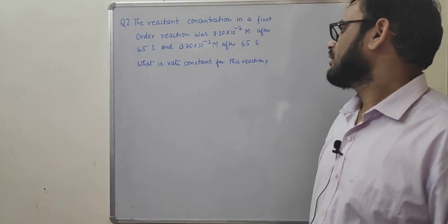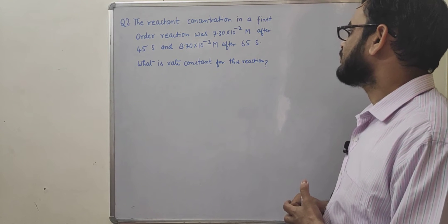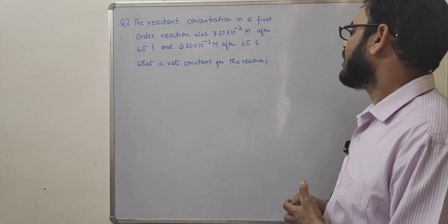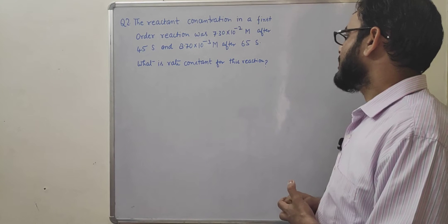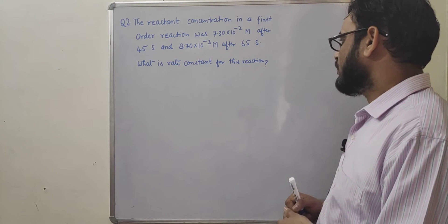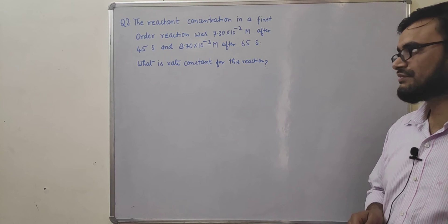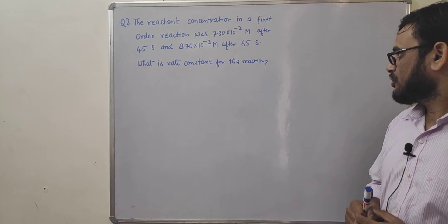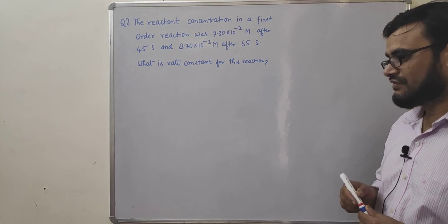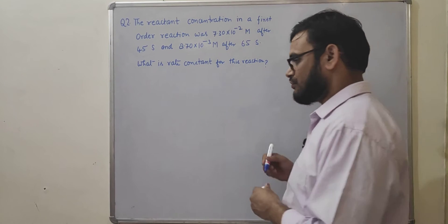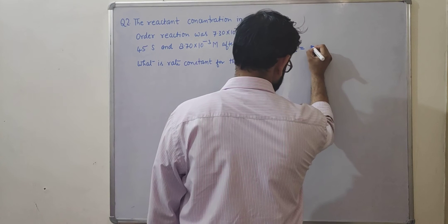Question number two: the reactant concentration in a first order reaction was 7.3×10⁻² molar after 45 seconds and 8.7×10⁻³ molar after 65 seconds. What is the rate constant for this reaction? To solve this type of question where two concentrations at two different time intervals are given, we use the formula K = 2.303 / (T2 − T1) × log(C1/C2).